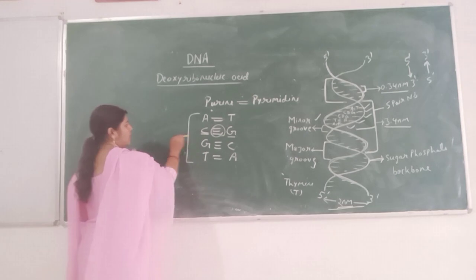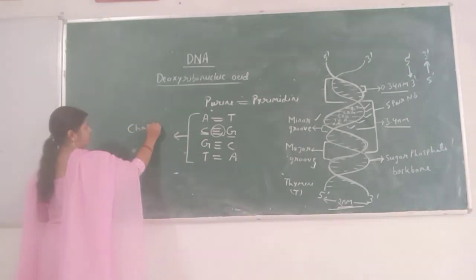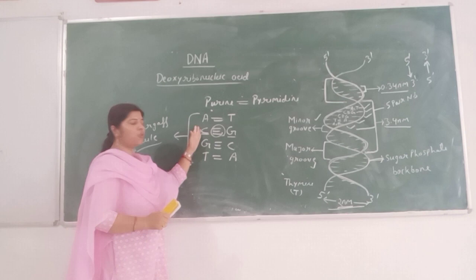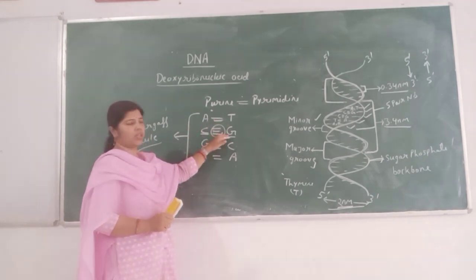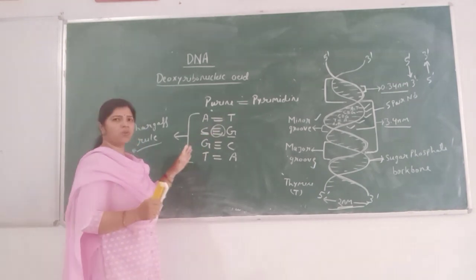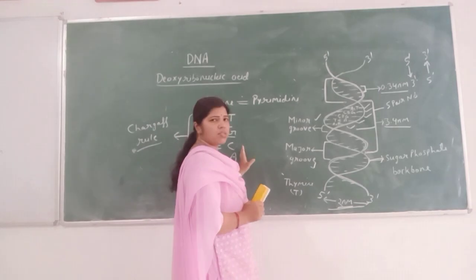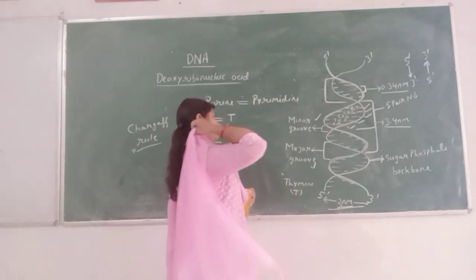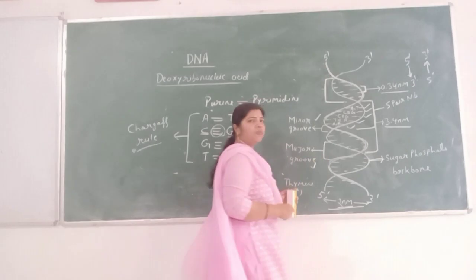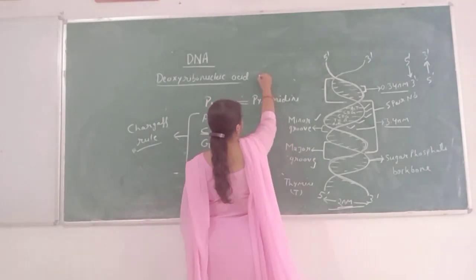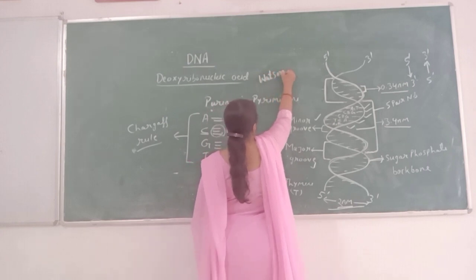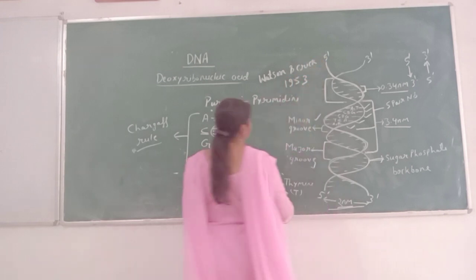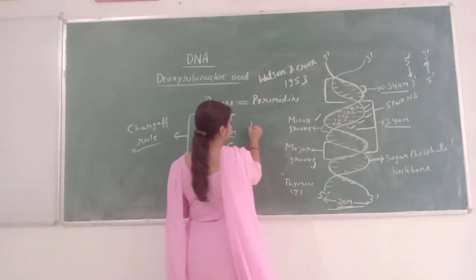This is Chargaff's rule. Because of these nitrogenous bases, DNA strands are complementary and antiparallel. This structure of DNA was given by Watson and Crick in 1953. This is the general structure of DNA, known as B-DNA.